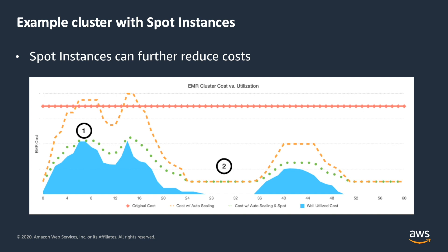Here is another graph showing how spot instances can further reduce cost. As the utilization of your cluster peaks and troughs through auto scaling and spot instances, the green dotted line indicates the amount of savings you will receive by leveraging these two features.